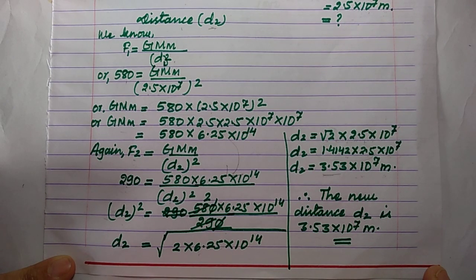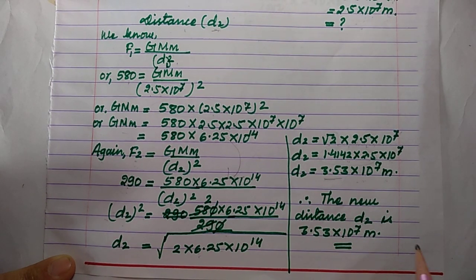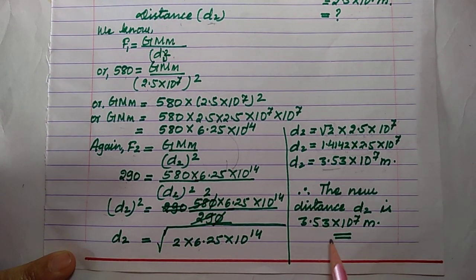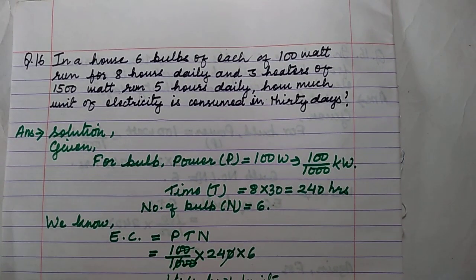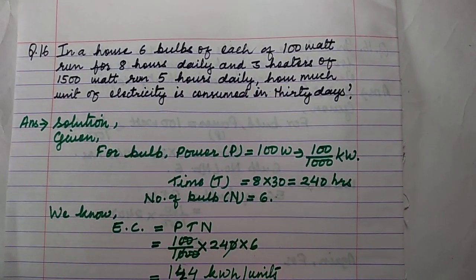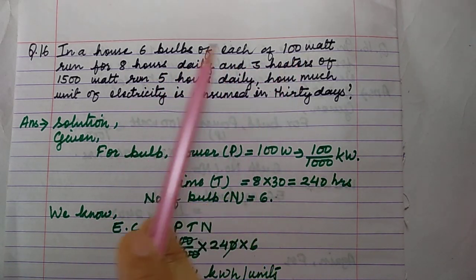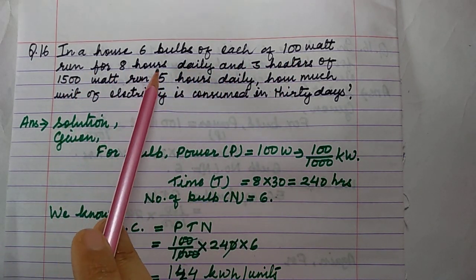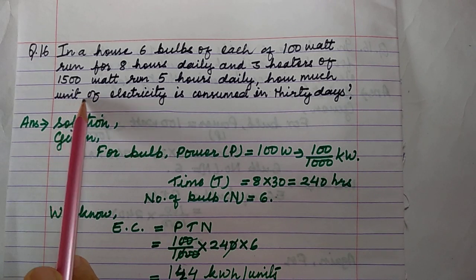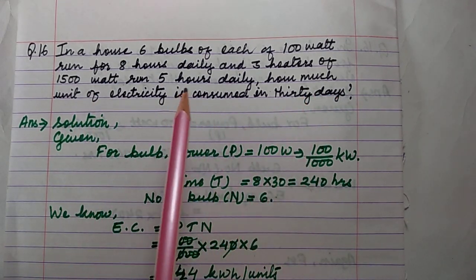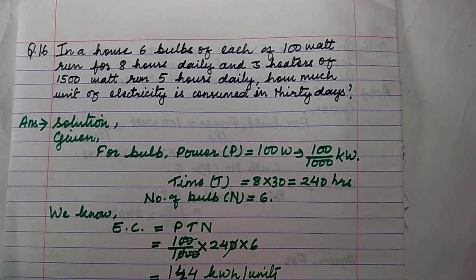The new distance where the force becomes 290 Newton is 3.53 × 10⁷ meters. That is your answer for question 15. Now we will go to question number 16: in a house, 6 bulbs of 100 watts each run for 8 hours daily, and 3 heaters of 1500 watts run for 5 hours daily. How much electricity is consumed in 30 days?